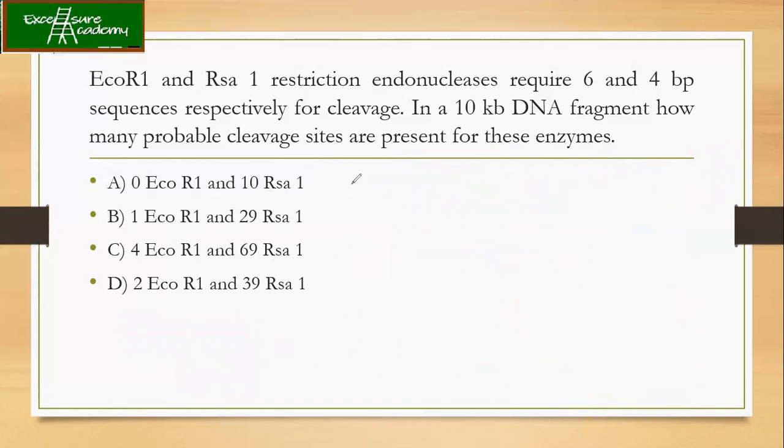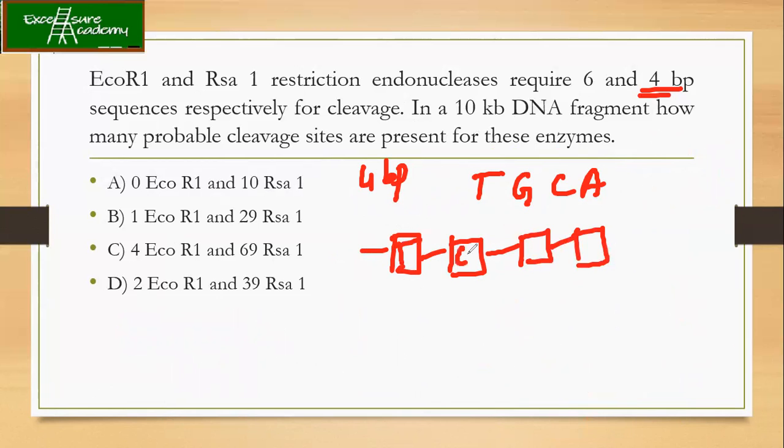So Rsa1 has got four sites. What are the four sites? Rsa1 has four base pairs, already given in the question. It is actually the T, G, C, A sequence. So let's say it has these four sequences: T, G, C, A.